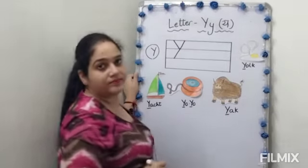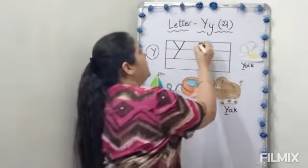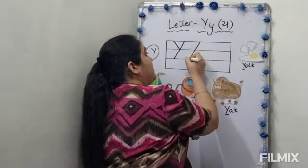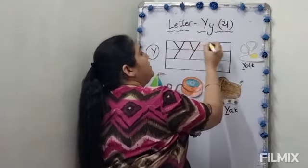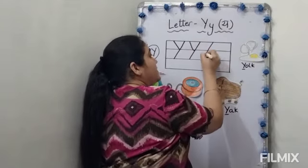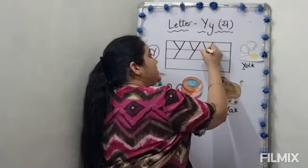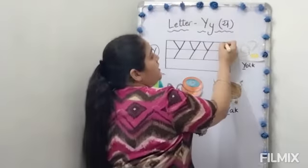Big slanting line. Okay. Big slanting line. Small slanting line. Big slanting line. Small slanting line. Y says yacht. Yacht.